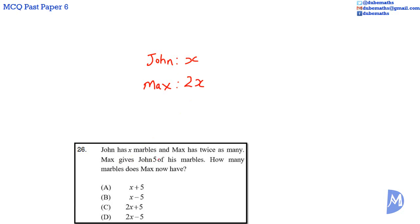Max gives John 5 of his marbles. So John would have X plus 5, and Max would now have 2X minus the 5 he gives to John. The answer is D.